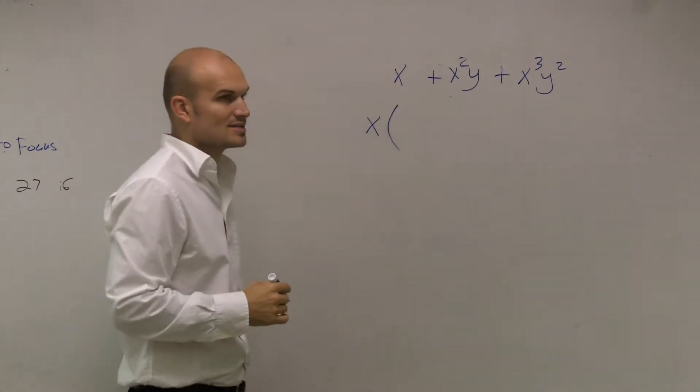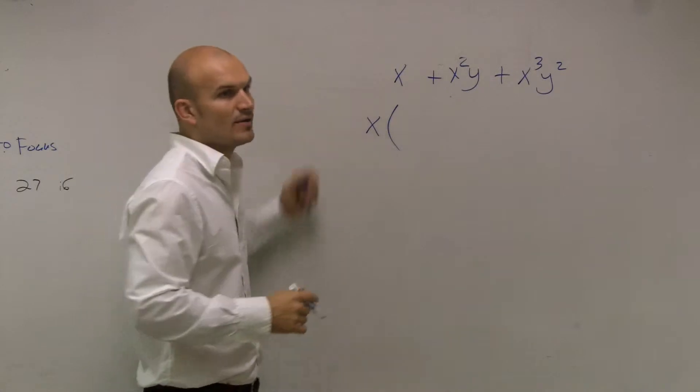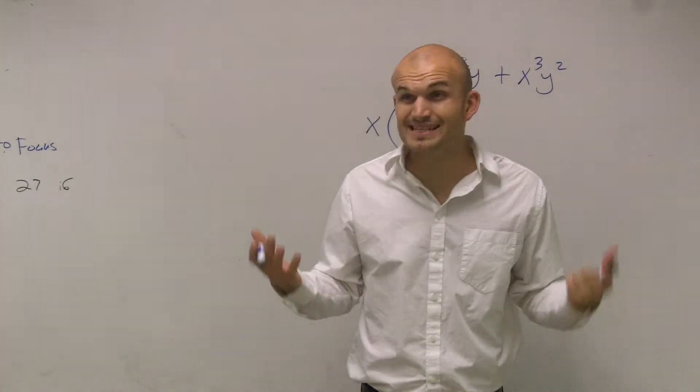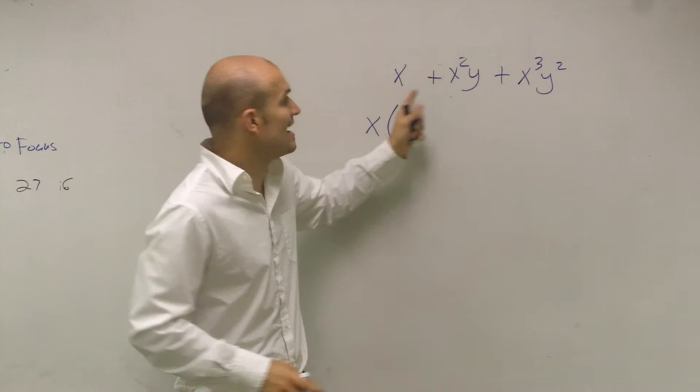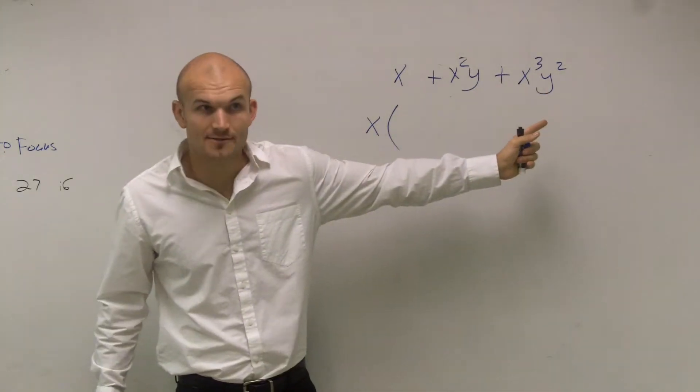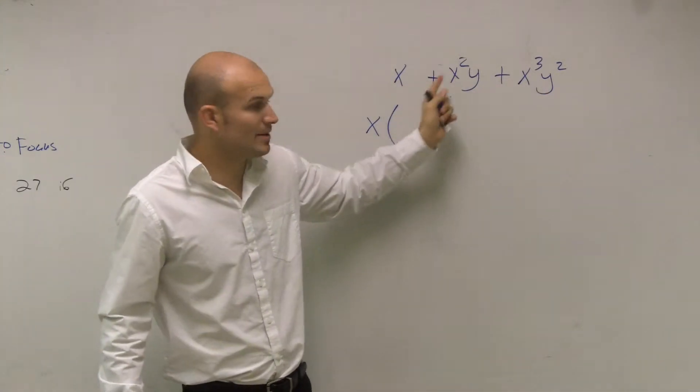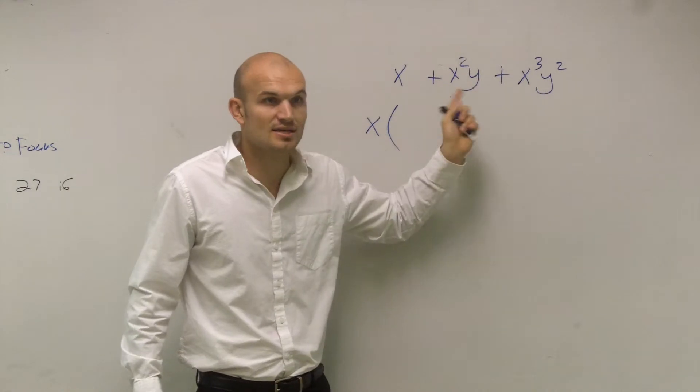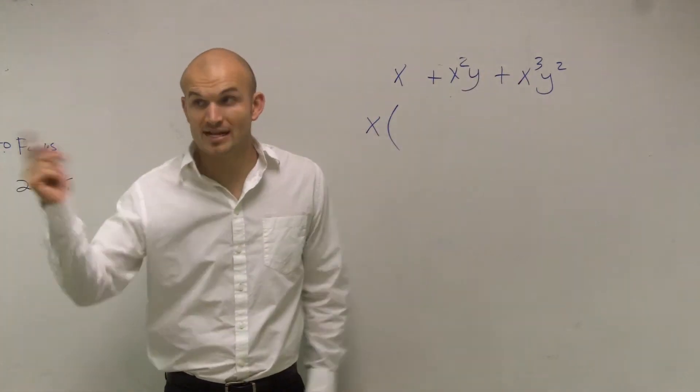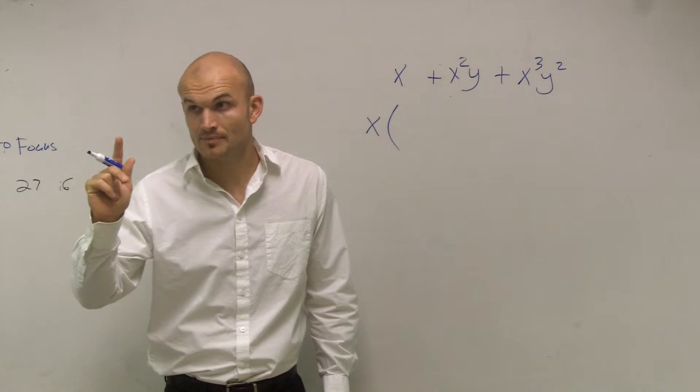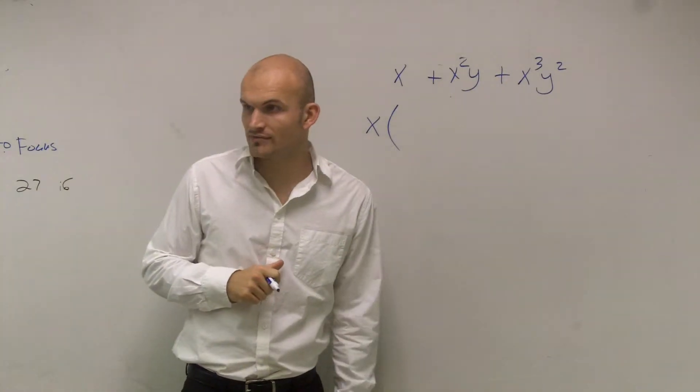When you factor out the x, what we're doing is I'm going to divide it out and see what my other answer is. So one factor is an x. X evenly divides into all three of those, correct? Everybody would agree to me that they all share an x. That's one factor. What is the other resulting factor?